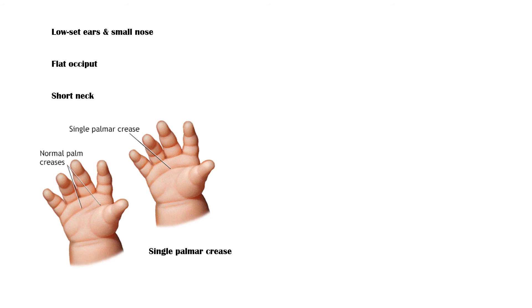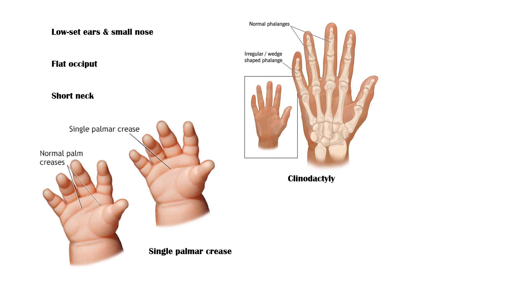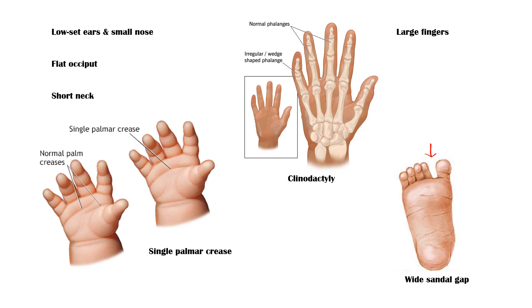Additional physical features include a flat occiput, short neck, single palmar crease, incurved fifth finger — also known as clinodactyly — large fingers, and a wide sandal gap.